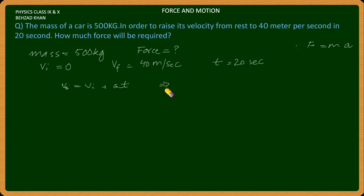The final velocity is 40, initial velocity is 0. We need to find the acceleration. So 40 = 0 + a × 20. Therefore, acceleration a = 40 divided by 20 = 2 meters per second squared.